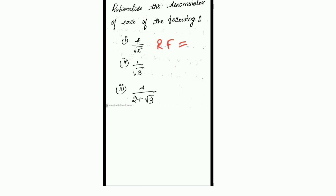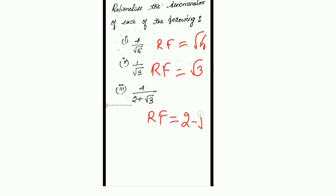I will give you some practice problems. Tell me the RF for each. First: 4/√5 — the denominator is a single number, so RF = √5. Second: it has √3 only, so RF = √3. Third: 2 + √3 — two terms, so RF = 2 − √3. You can apply the previous method and solve. Take a rough note and try these problems to get a better idea of how to rationalize the denominator.